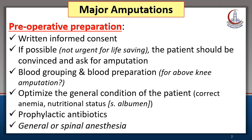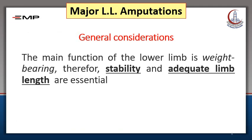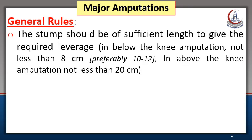The patient should be prepared for general or spinal anesthesia. When planning a major lower limb amputation, remember that the main function of the lower limbs is weight-bearing, so stability and adequate limb length are essential. The stump should be of sufficient length to give the required leverage. In below-knee amputation, it should not be less than 8 cm, preferably 10–12 cm.